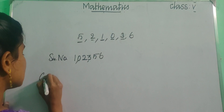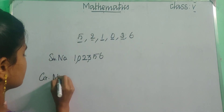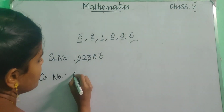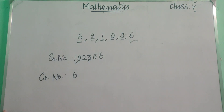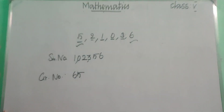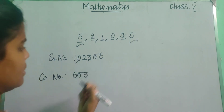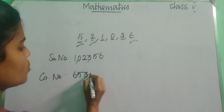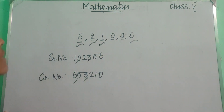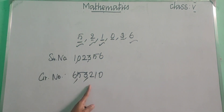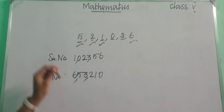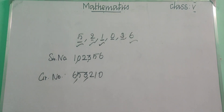And what is the greatest number which we can form from these digits? The greatest digit is 6, so the first number is 6. Then 5, then 3, then 2, then 1, and at the last 0. So we got the greatest number as 6,53,210.